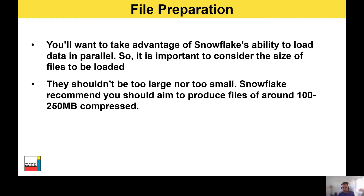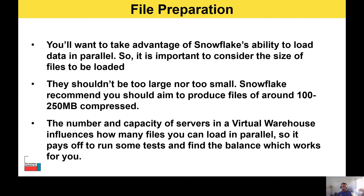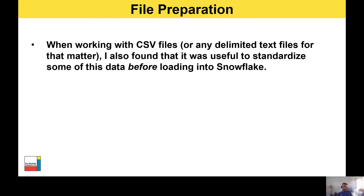This might force you to consider splitting larger files into smaller ones, or grouping several small files into one larger one. In one project we worked on, we needed to migrate a lot of historical data from a legacy on-premise data warehouse to Snowflake. We used our ETL tool to extract it into monthly increments, then wrote the data out to multiple CSV files and pushed those into the cloud storage area using the external stage approach discussed in part one. We were then able to load those files in parallel into one target table. The number and capacity of servers in a virtual warehouse also influences how many files you can load in parallel.